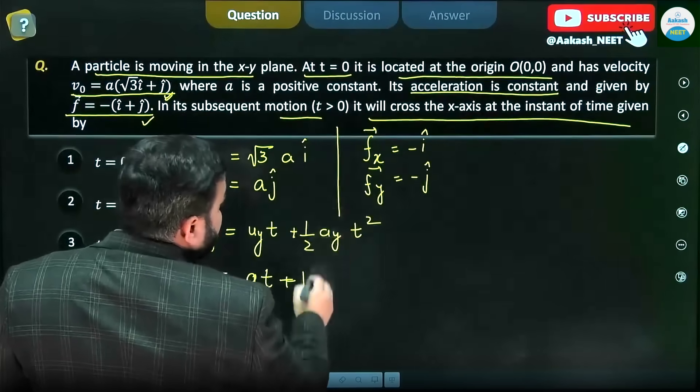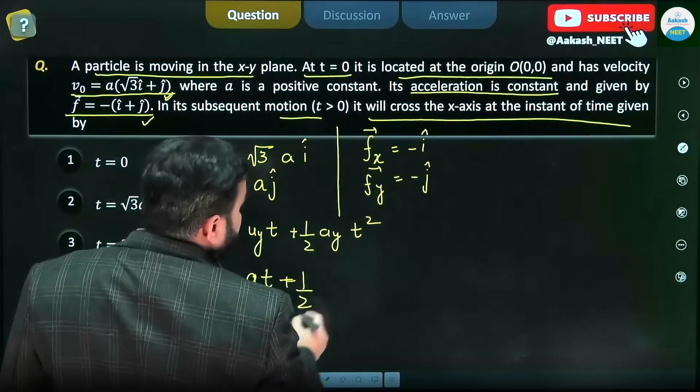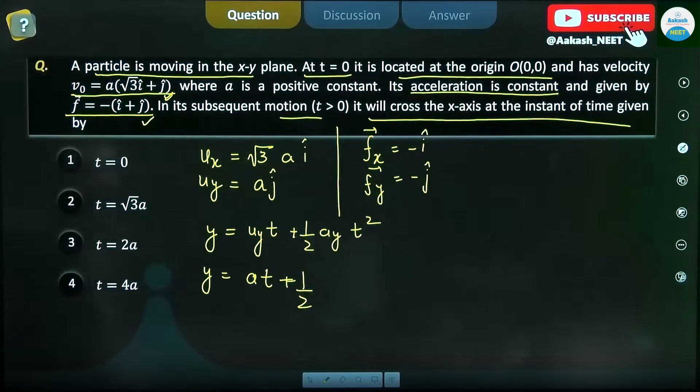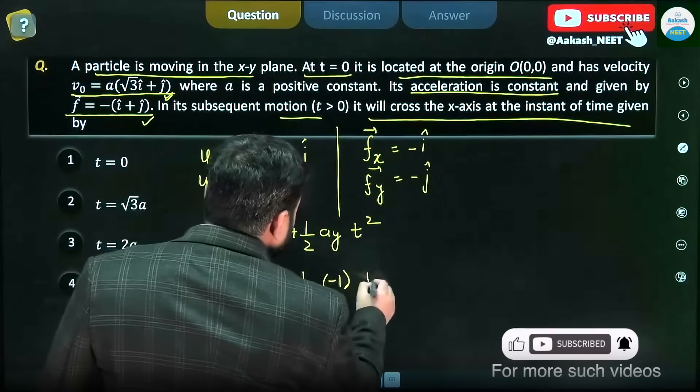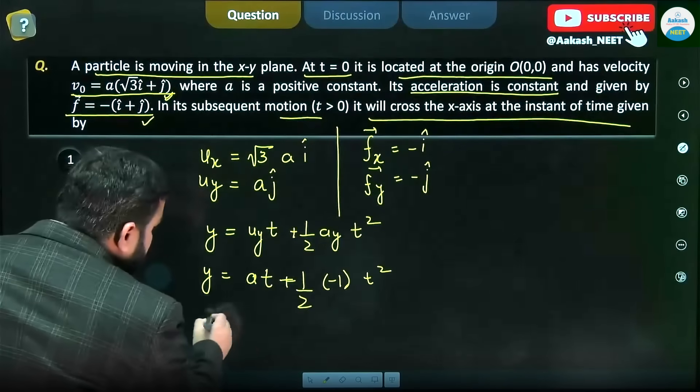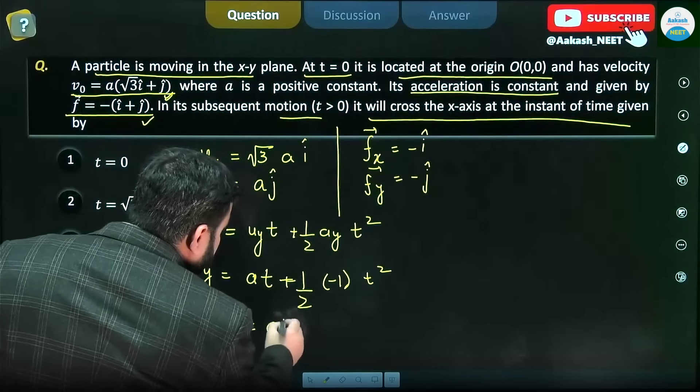In place of aᵧ we will be using fᵧ. So what is fᵧ here? This will be -1 into t². Now this y is equal to zero, so this will be...